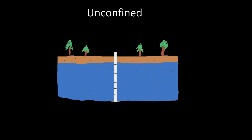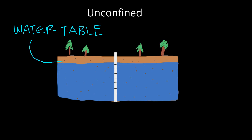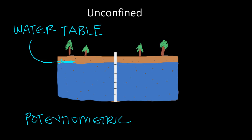Before we get into this, I need you to know two terms. The first is water table, which you probably can figure out what that is. The water table is the elevation of water in the aquifer — so in this example right here, the water table will be right there. The other term is potentiometric surface, and the potentiometric surface is the elevation to which water will rise in a well. So in this example, it'll be right there.